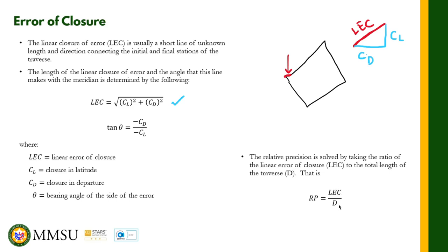That's LEC over D. Those are the formulas that we need to know in order to solve the linear error of closure for our traverse. Let us try to solve some problems.